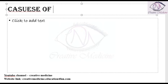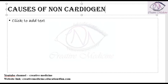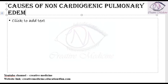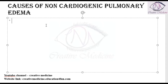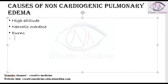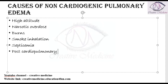What are the causes of non-cardiogenic pulmonary edema? Non-cardiogenic pulmonary edema is seen in high altitude, narcotic overdose, burns, smoke inhalation, septicemia, post-cardiopulmonary bypass, Plasmodium falciparum malaria, and also in chest trauma.